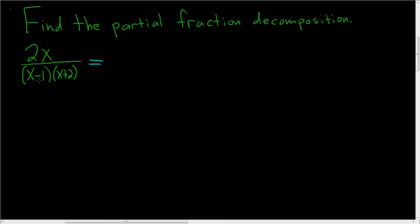Now to set it up, you just look at these factors here. This is linear and it appears once, so we only have to write it once. So it's A over x minus 1 plus B over... This is linear, it appears once, so we only write it once. So x plus 2.